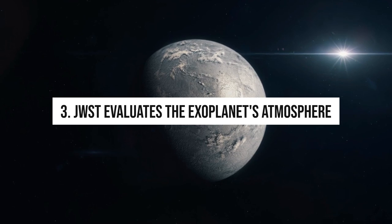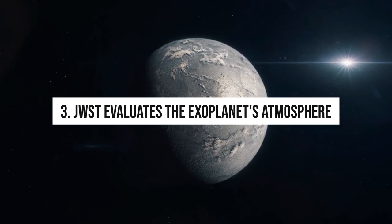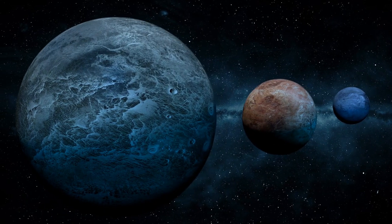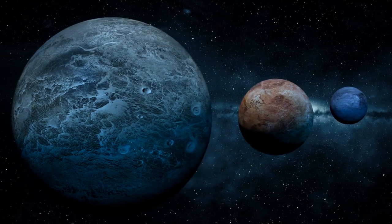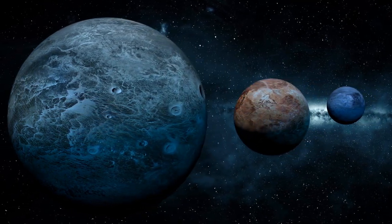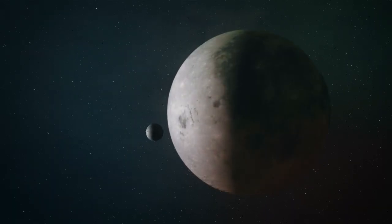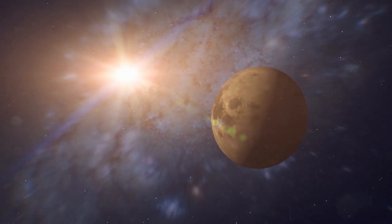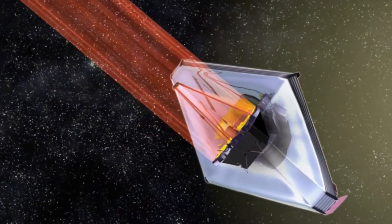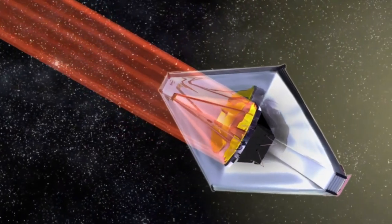Number 3. Webb Telescope evaluates the exoplanet's atmosphere. Although astronomers have discovered more than 5,000 exoplanets thus far, we still know very little about many of them. Although Webb Telescope is not built for finding new exoplanets, it will be able to undertake transit spectroscopy, which will allow for considerably more accurate depictions of already discovered worlds.